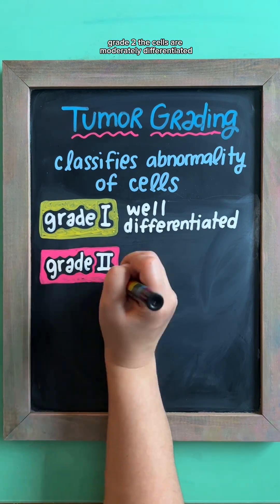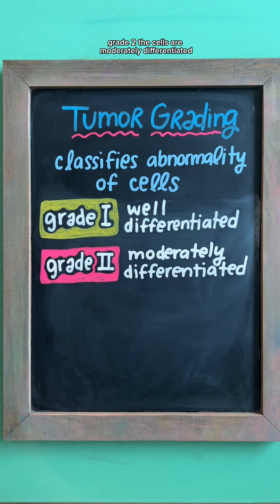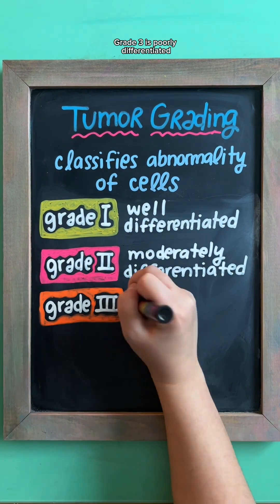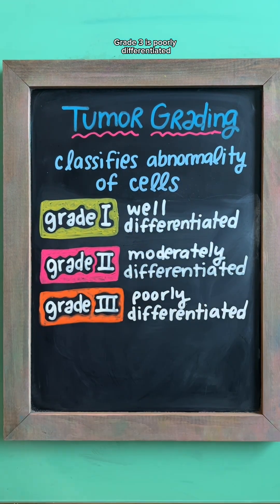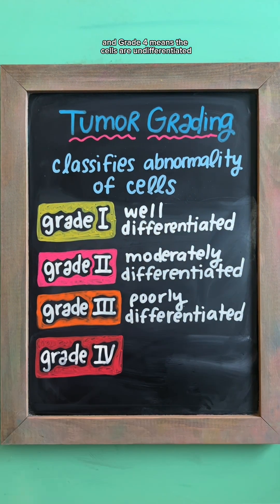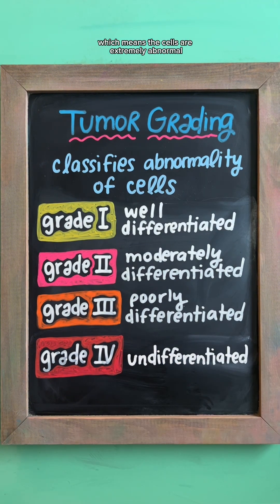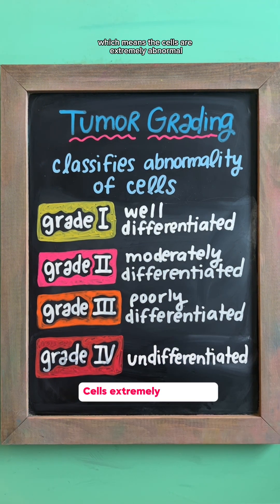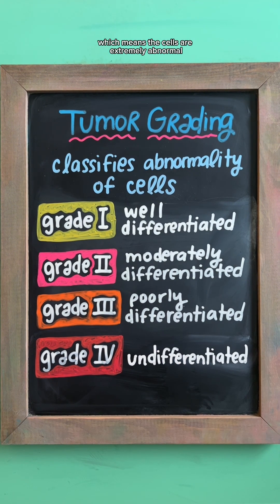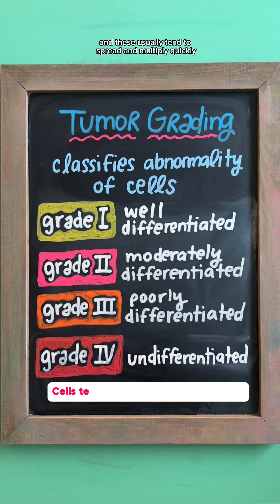Grade 2 means the cells are moderately differentiated. Grade 3 is poorly differentiated. And grade 4 means the cells are undifferentiated, which means the cells are extremely abnormal and these usually tend to spread and multiply quickly.